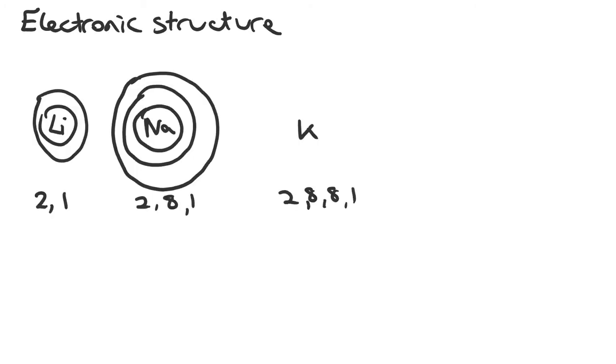Here we are going to look at electronic structure, in particular build on the theory that we have from Junior Cert where we are looking at shells of electrons surrounding an atom. To start with we are going to look at group 1 and build up electronic structure using the old method and then introduce a new method.